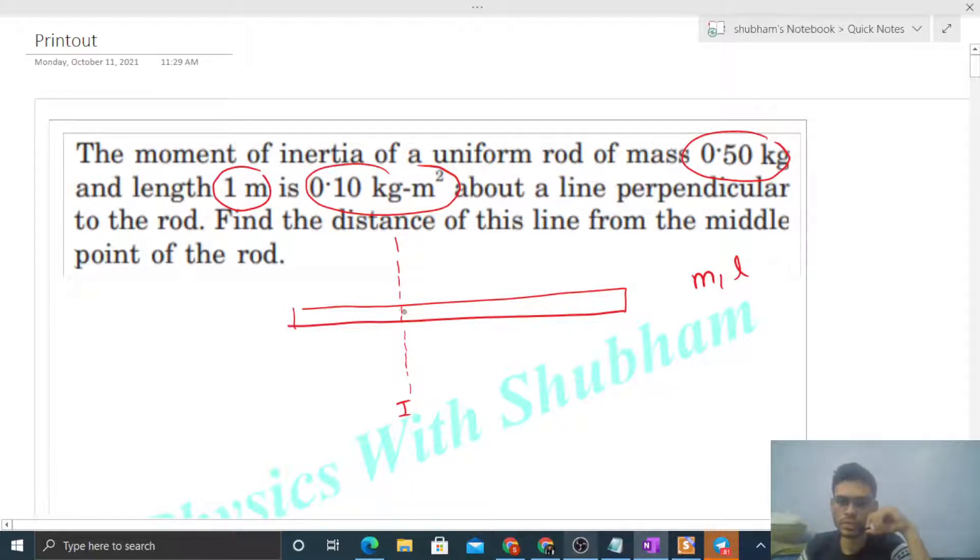We have to find out the distance of this axis from the center. We can draw a line perpendicular to this rod and passing through the center. Actually, this center of the rod will also be its center of mass because the rod is uniform. So we can find out the moment of inertia of a rod about an axis perpendicular to the rod and passing through its center of mass. That we already know: I of center of mass of a rod will be ml square by 12.